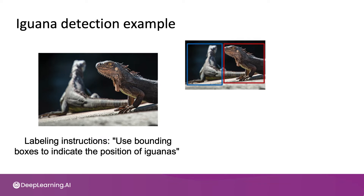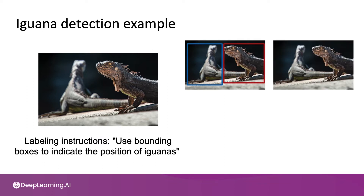A second labeler that is equally hardworking, equally diligent, may say the iguana on the left has a tail that goes all the way to the right of this image. So the second labeler may indicate one iguana, two iguanas. Good job labeler — hard to fault this labeler either.